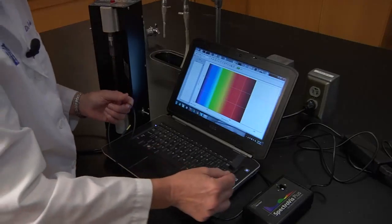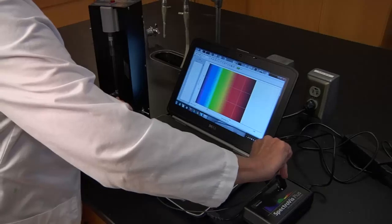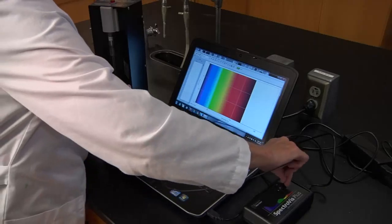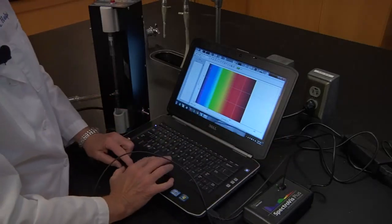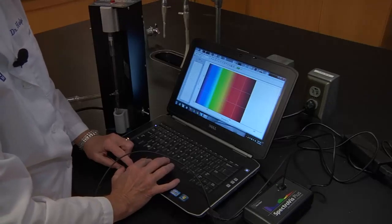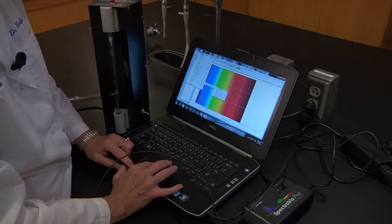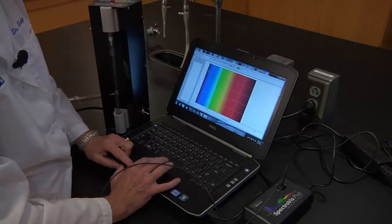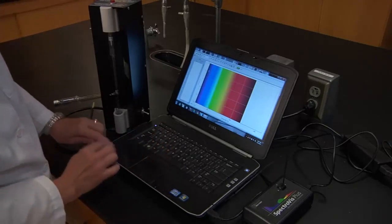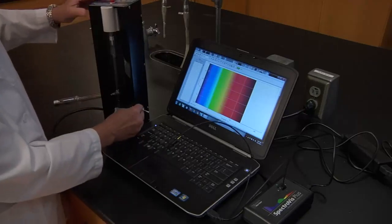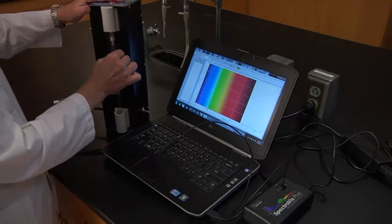So we're going to put our fiber optic cable in our spectrophotometer. We're going to tell our software that we want to measure intensity and we're going to look at our hydrogen tube here.